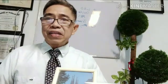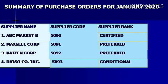Another vital piece of information for supply chain and logistics is the summary of purchase orders for a certain month. An example here is January 2020, showing supplier name, supplier code, and supplier ranking. ABC Marketing is at certified level; the highest is preferred level; and DISO is conditional, meaning DISO has to complete other requirements to be certified as an external vendor.